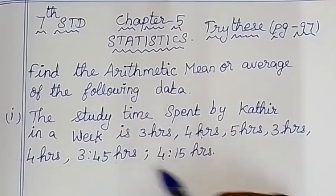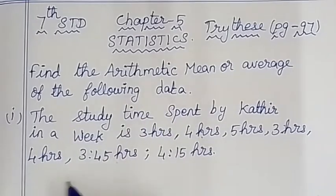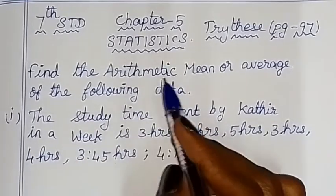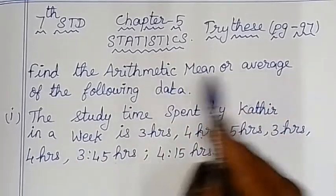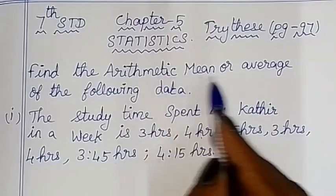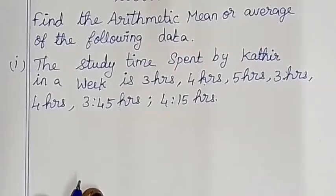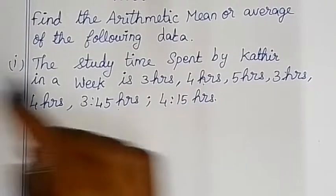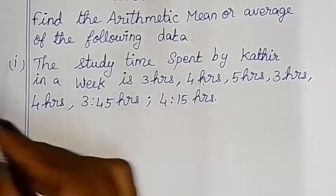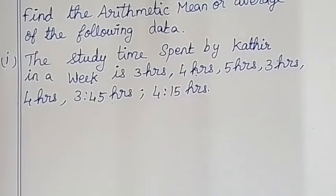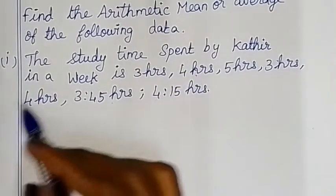Let's take three subdivisions. Arithmetic mean and average — arithmetic mean is not average. So arithmetic mean is not average. We have a formula. Let's solve it.